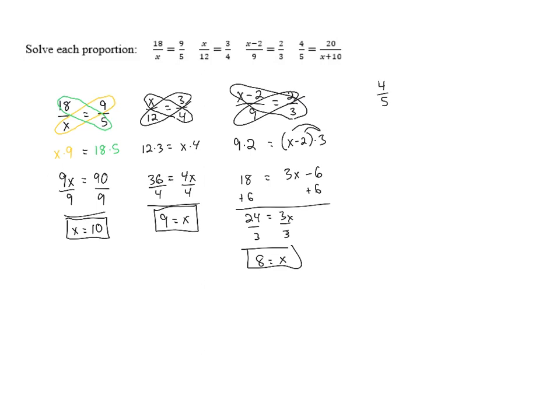We've got 4 fifths equals 20 over x plus 10. Again, we're going to cross multiply. So in that direction, we have 5 times 20. In the other direction, we have 4 times x plus 10.